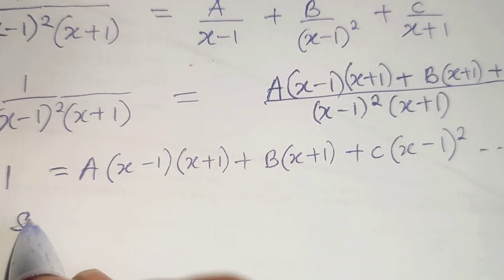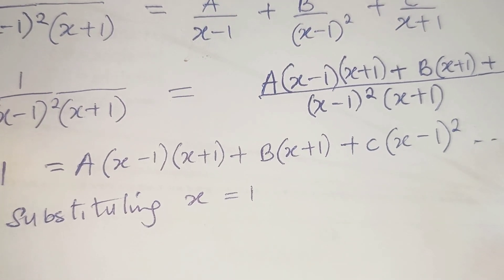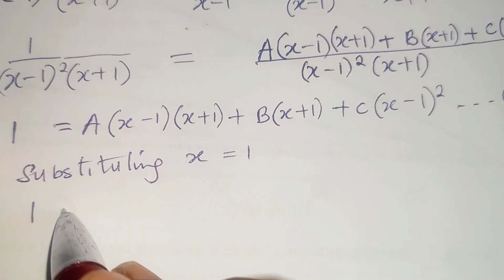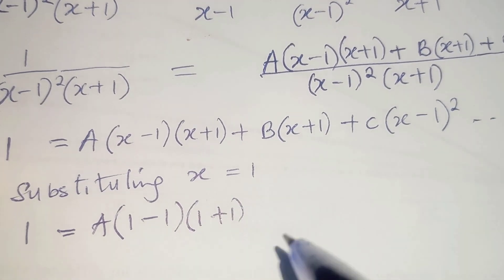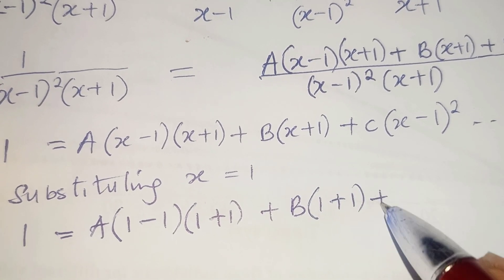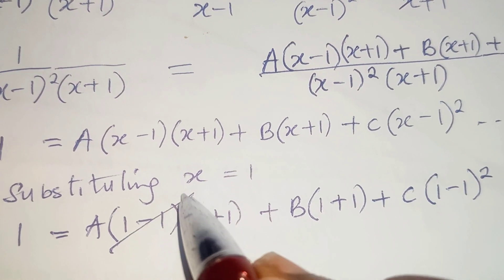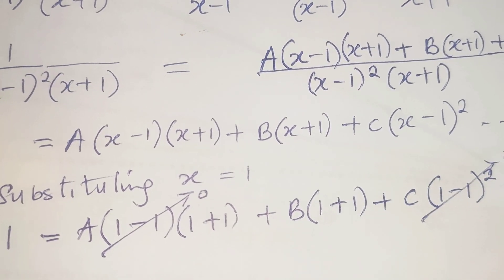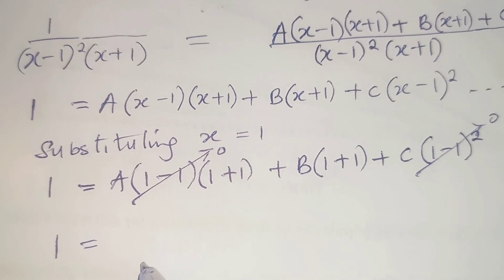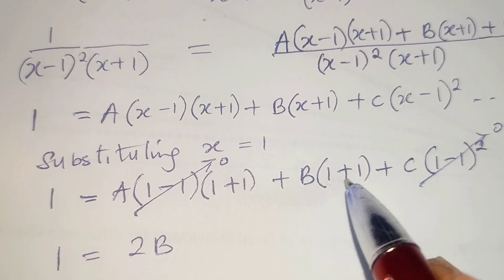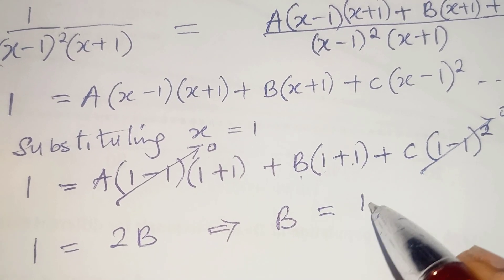If we substitute x equal to 1 in equation star, we get 1 equals A(1 minus 1)(1 plus 1) plus B(1 plus 1) plus C(1 minus 1) squared. The first and third terms go to 0, leaving 1 equals 2B. That implies B equals 1 over 2.